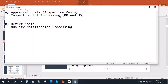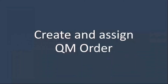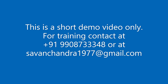We will now see in the system how to create the QM order. In both cases — appraisal costs and defect costs — you need a QM order. We will see how the QM order is created and how it is assigned to lots or notifications. Before creating an order, we need to understand certain terminologies. The first one is the order category — all the QM orders which are created fall under a specific order category.